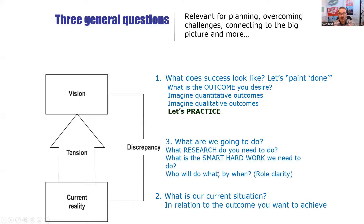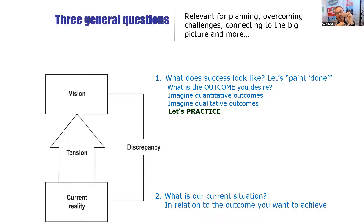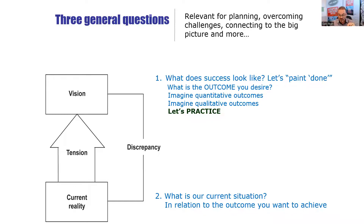So then you focus on what is your current reality — what is your current situation as it relates to the outcome you're trying to achieve? It's really important to do that. You have to get good at assessing your current reality accurately. What are the good things in your current reality and the not-so-good things? Both are important because that's going to set the context for the third step, which is your actions.